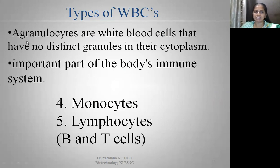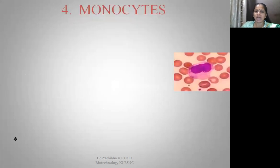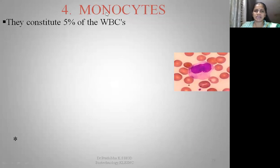Agranulocytes are white blood cells that have no distinct granules in their cytoplasm. They are an important part of the body's immune system, comprising monocytes and lymphocytes. In monocytes there are no subtypes, but in lymphocytes there are two types: B-lymphocytes, produced by the bone marrow, and T-lymphocytes, produced by the thymus.